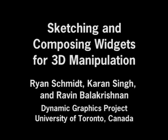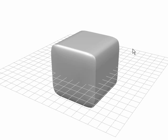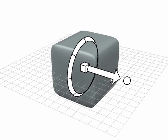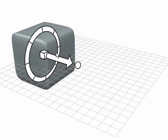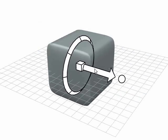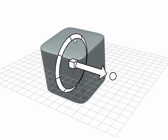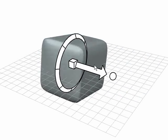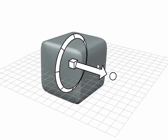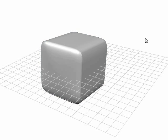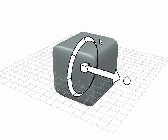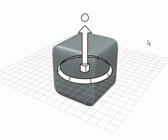In this work, we present a set of sketch-based tools for manipulating 3D objects. To translate an object, the user first selects it and then draws a stroke in the desired translation direction. The system automatically creates axis-constrained translation and rotation widgets. The widget is dismissed automatically when the object is deselected. Axis strokes can be drawn anywhere on the screen, facilitating quick interaction.